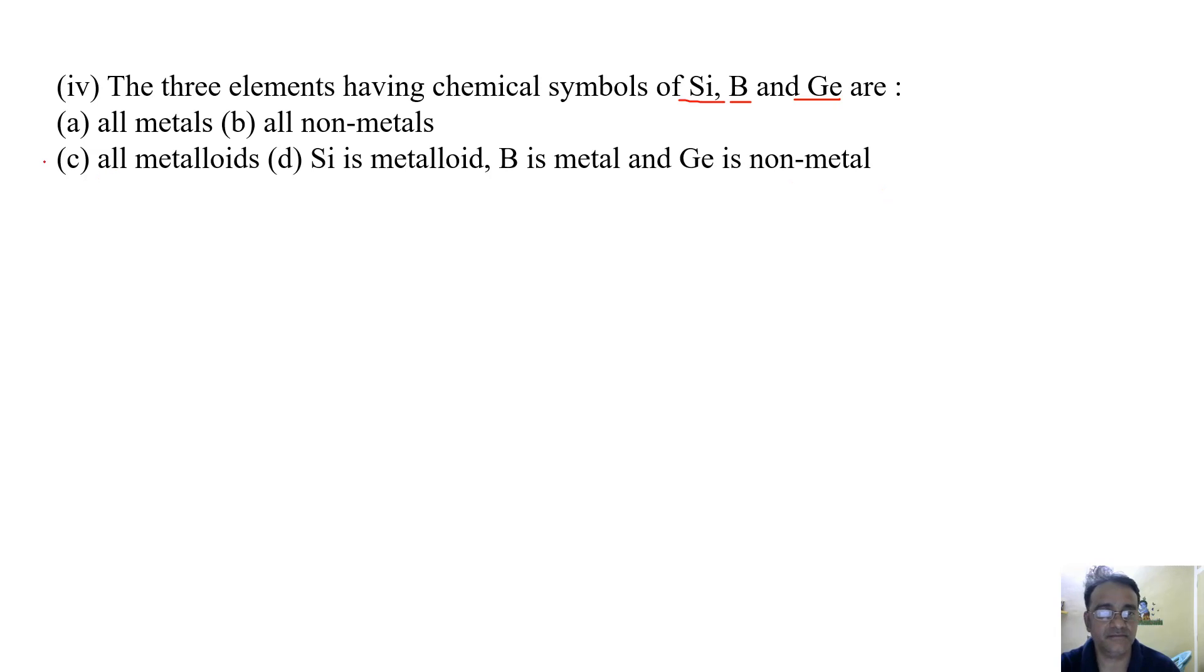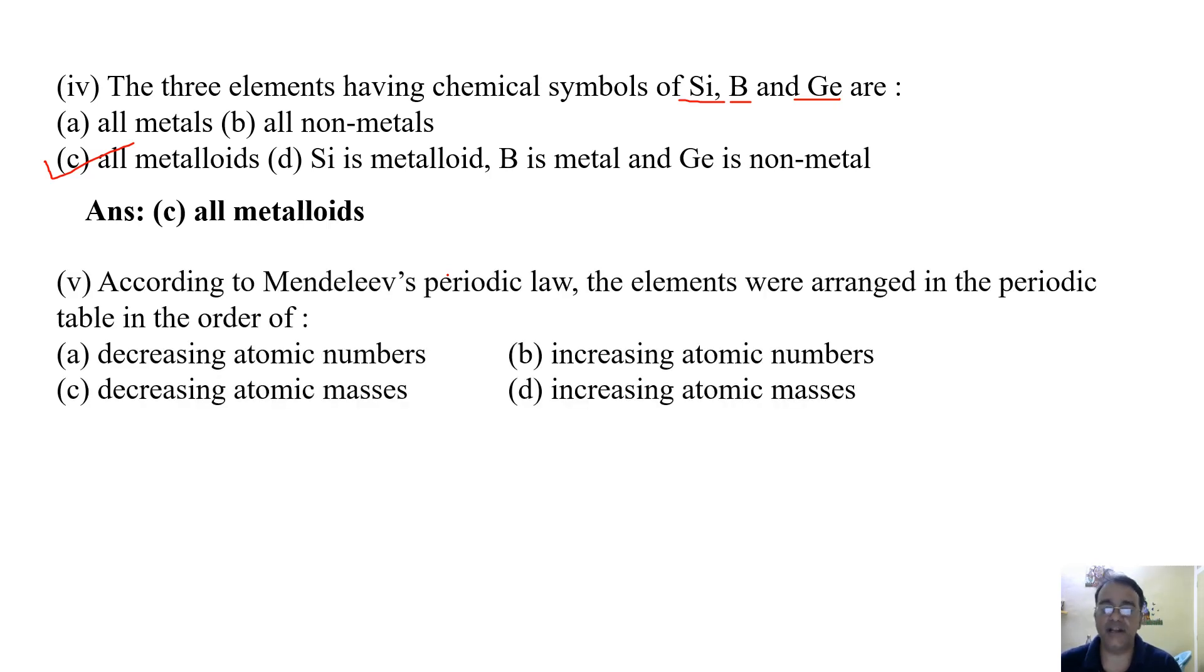Now the last question: according to Mendeleev's periodic law, the elements were arranged in the periodic table in the order of - decreasing atomic number, increasing atomic number, decreasing atomic masses, or increasing atomic masses? Which one is the correct one? Increasing atomic masses.